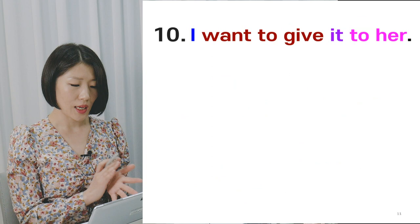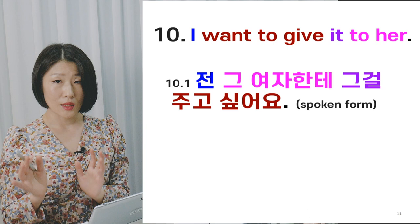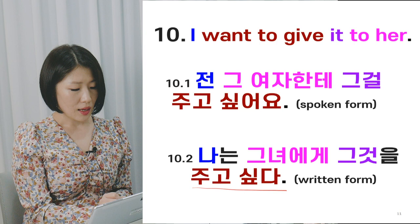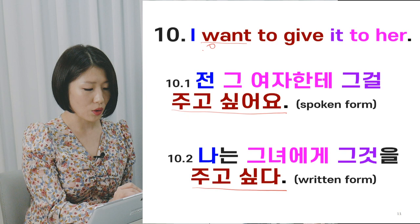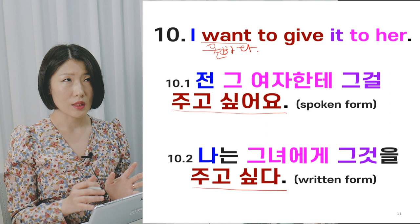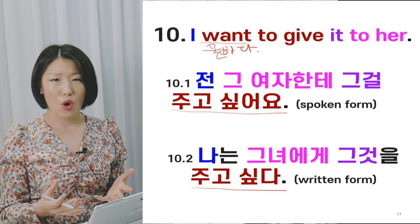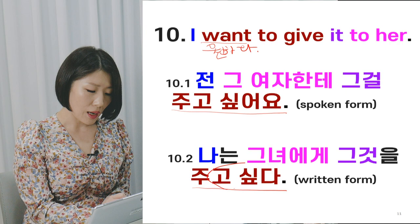Sentence 10: 'I want to give it to her.' Spoken: 전 그 여자한테 그걸 주고 싶어요. Written: 나는 그녀에게 그것을 주고 싶다. You might know that 'want' is 원하다, but using 원하다 here sounds very awkward — it is a direct translation from English. Sometimes it appears in music lyrics for strong impact, but in real conversation we use 고 싶다. Please practice 고 싶다 more.